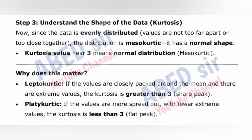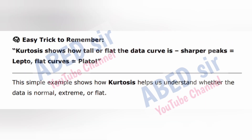Why does this matter? Leptokurtic: if values are closely packed around the mean with extreme values, kurtosis > 3 (sharp peak). Platykurtic: if values are more spread out with fewer extreme values, kurtosis < 3 (flat peak). Easy trick: kurtosis shows how tall or flat the data curve is — sharper peaks = lepto, flat curves = plato. This simple example shows how kurtosis helps us understand whether the data is normal, extreme, or flat.